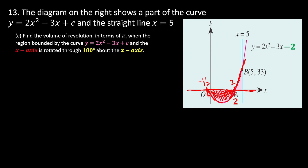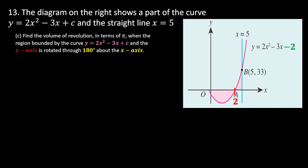Following the textbook answer, we use limits 0 to 2 instead of -1/2 to 2. The integral is π∫y² dx from 0 to 2. We substitute y = 2x² - 3x - 2 and need to square it, which is a long expansion done separately.